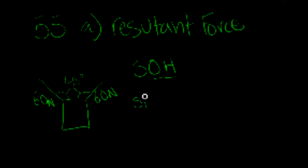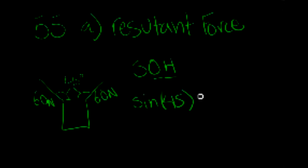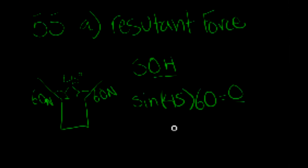So, what you want to do is take the sine of the angle 45 degrees, and that equals the opposite over 60 newtons. You multiply that 60 newtons by the sine of 45 to get the value of the opposite. When you do that, you get 42.4 newtons.